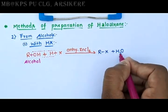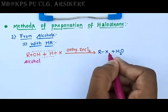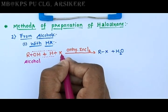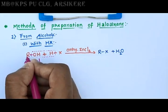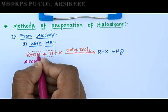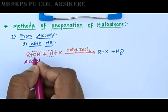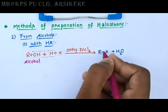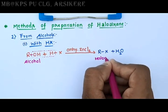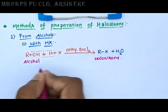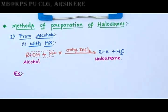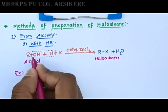OH and H combine to form H₂O, and R⁺ combines with X⁻ to form RX. This product is generally called a haloalkane. In this reaction, primary and secondary alcohols are treated with hydrogen halide in the presence of anhydrous zinc chloride.